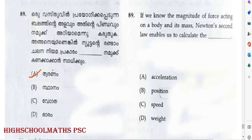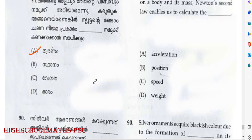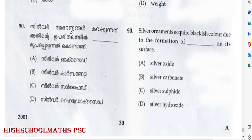Question about silver compound — discussing the difference between silver hydroxide and silver sulfide. Answer: Option C — Silver sulfide.